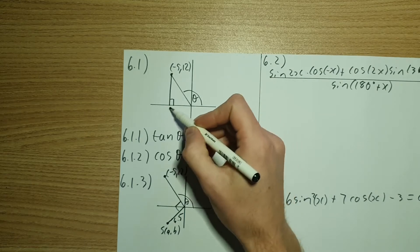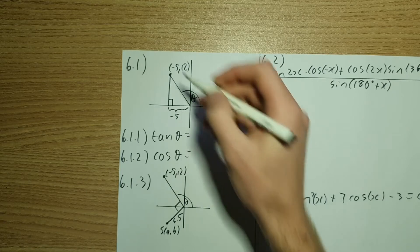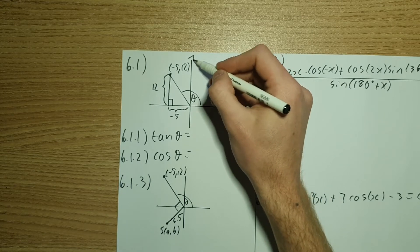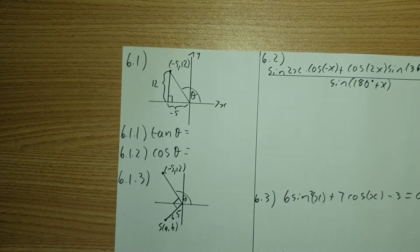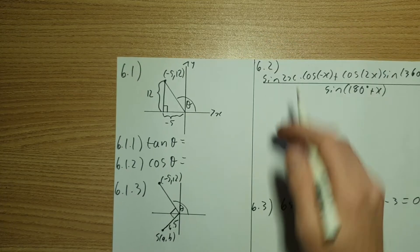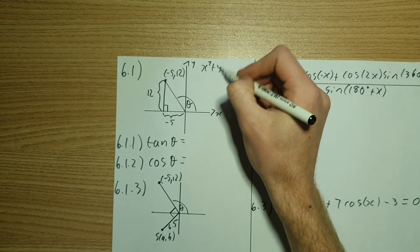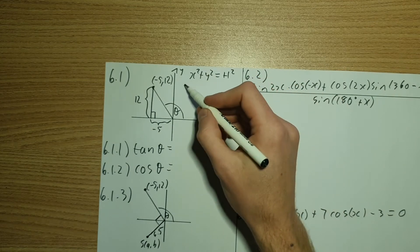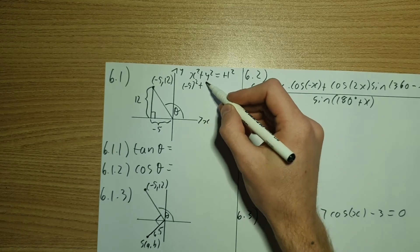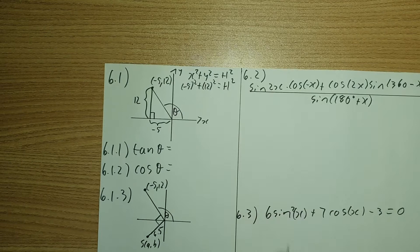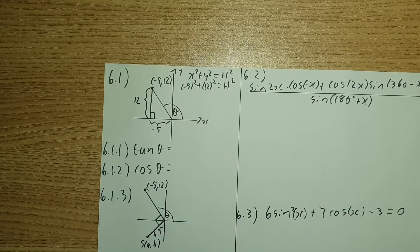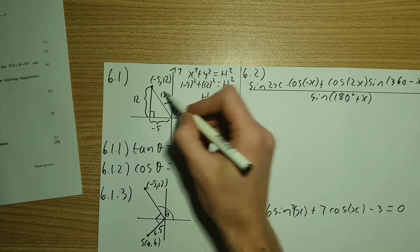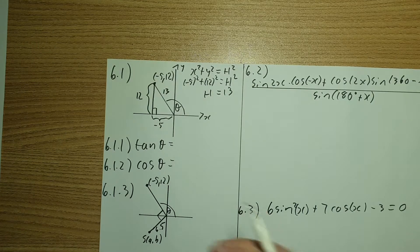So over here I've redrawn it. What we need to do is construct a right angle triangle. So I'm going to take that line down. That means this distance here is 5, or it's negative 5. And this distance over here is my 12 value. The next thing that you can do is calculate your hypotenuse.